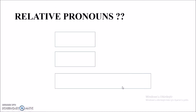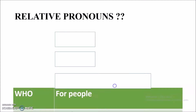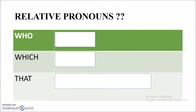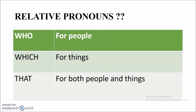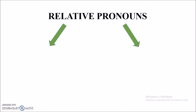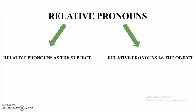When we say relative pronouns, these are the pronouns you need to think of: 'who', 'which', and 'that'. We use 'who' for people — if you are describing or giving more information about people, you use relative pronoun 'who'. If you are giving more information about things, you use 'which'. And 'that' is used for both people and things. We know that relative pronouns can be used in two ways: as the object and as the subject of the relative clause.